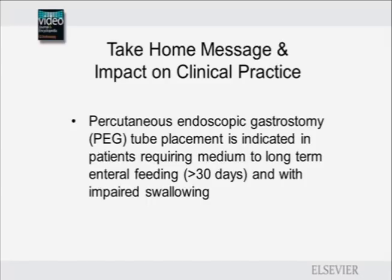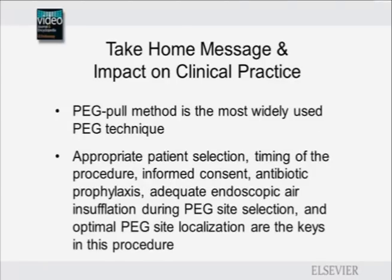PEG tube placement is indicated in patients requiring medium to long-term enteral feeding and with impaired swallowing. The PEG pull method is the most widely used PEG technique. Appropriate patient selection, timing of the procedure, informed consent, antibiotic prophylaxis, adequate endoscopic air insufflation during PEG site selection, and optimal PEG site localization are the keys in this procedure.